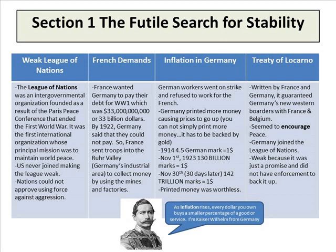They were using force to get their money back for damage caused to France during World War I. But with no money to pay, this further forced Germany into a mental state of retaliation. Because of all this debt, Germany had inflation. German workers went on strike and refused to work for the French. Germany printed more money, causing prices to go up — you cannot simply print more money; it has to be backed by gold. In 1914, 4.5 German marks equaled $1. By November 1st, 1923, it was 130 billion marks to $1 — useless paper.